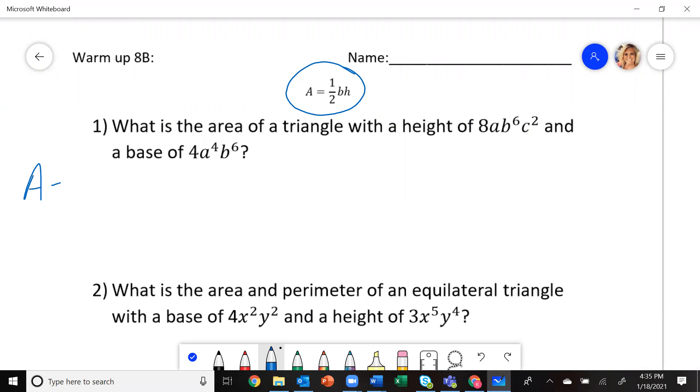They gave us the formula for the area. So the area is going to be 1 half times the base, 4A to the 4th, B to the 6th, times the height. The height is 8AB to the 6C squared.